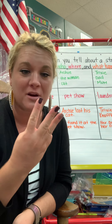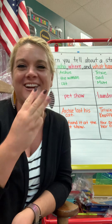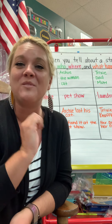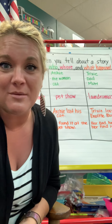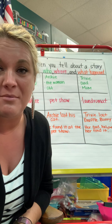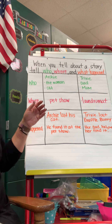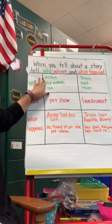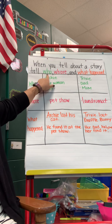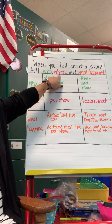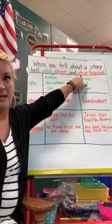There are three things you want to remember when you retell a story, and I have a little chart back here to help us remember. We're going to practice this with a couple of books that we've already read, so it's something familiar to us. When you tell about a story, you want to make sure that you tell who was in the story, where it happened, and what exactly happened.